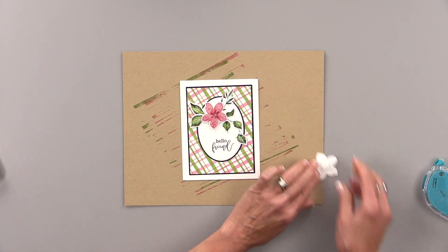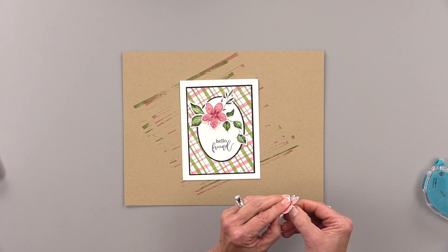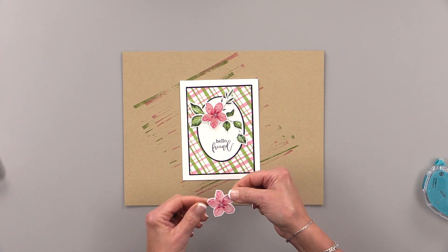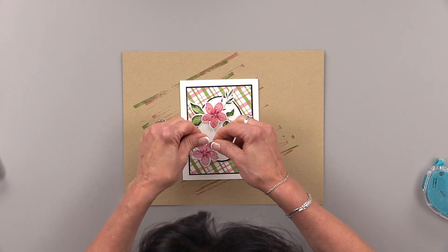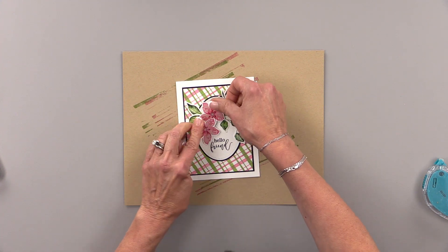I'm popping up the flowers with some foam squares. To make them look like two different flowers, I'm just changing the orientation. That's really all you need to do to make them look different. One's facing to the right and the bottom one is facing to the left.